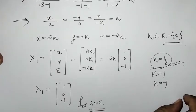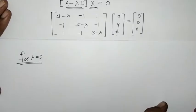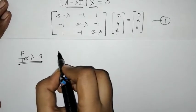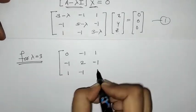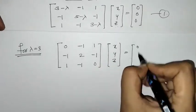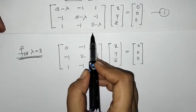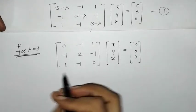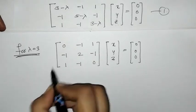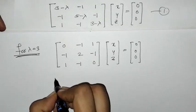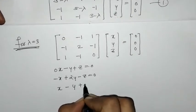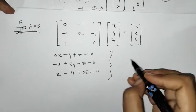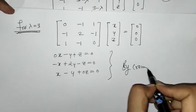In the same manner we find the next eigenvector. We put lambda equals 3 in the matrix equation and solve for the linear equations in x, y, z. We solve by Cramer's rule, considering the two independent equations.